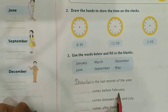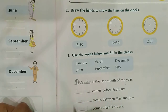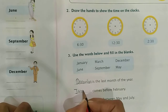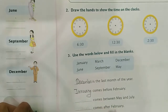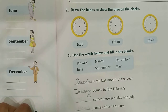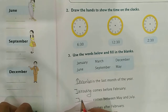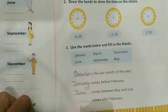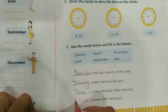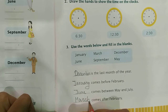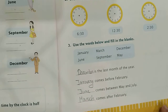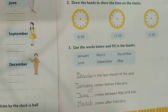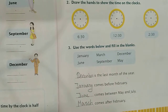Which month comes before February? January. Which month comes between May and July? It's June — June comes between May and July. Which month comes after February? March — March comes after February. So students, this is all about our chapter on Time. I hope you got it very well. Thank you for watching this video.